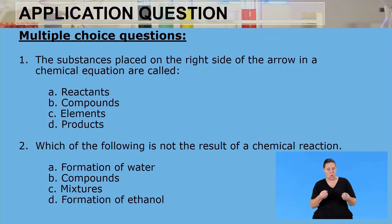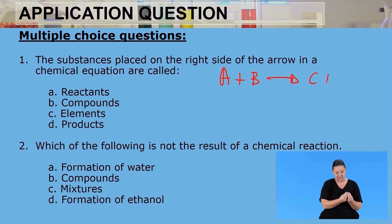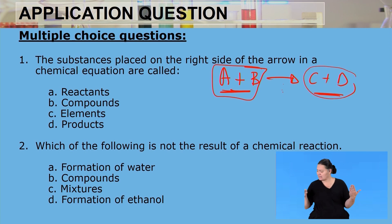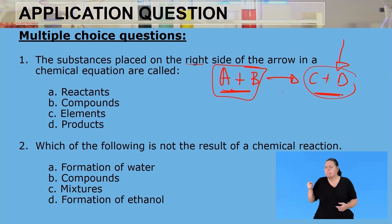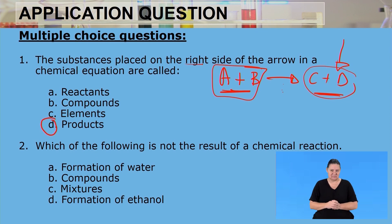The first question asks: substances placed on the right-hand side of the arrow in a chemical equation are called what? In a general equation, we have substances that react together to form products. Those written on the left-hand side of the arrow are the reactants, and those written on the right-hand side are the products. So the answer is D — products.